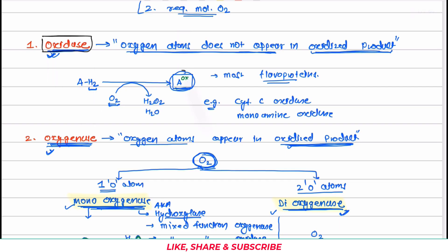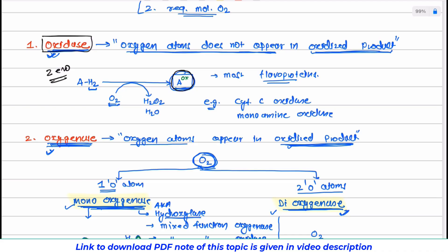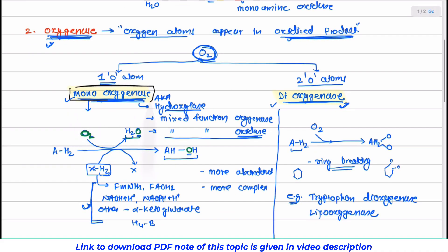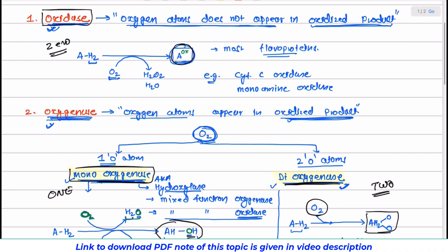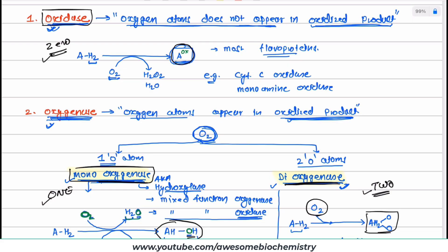To summarize: in oxidase, zero oxygen atoms from molecular oxygen appear in the final oxidized product; in monooxygenase, one oxygen atom appears; and in dioxygenase, two oxygen atoms appear. The difference is very straightforward. This completes our discussion about oxidase and oxygenase. I hope you will no longer have any confusion differentiating between oxidase, monooxygenase, and dioxygenase.